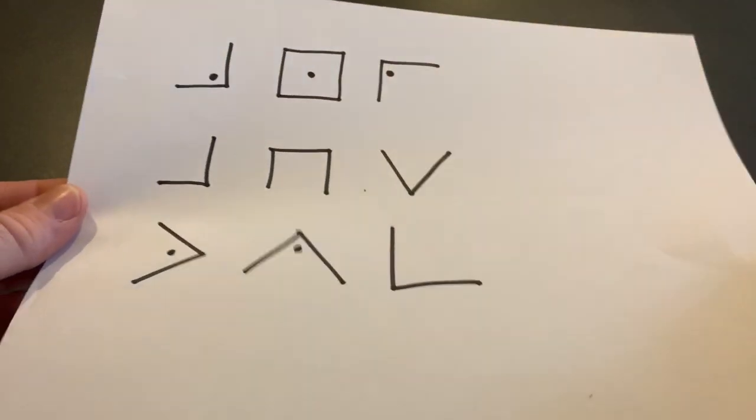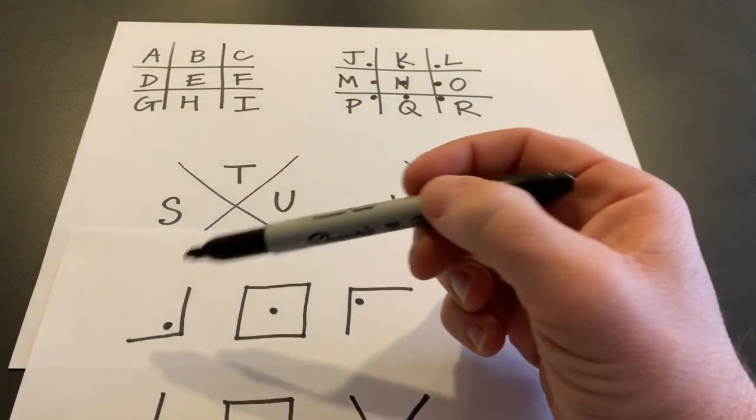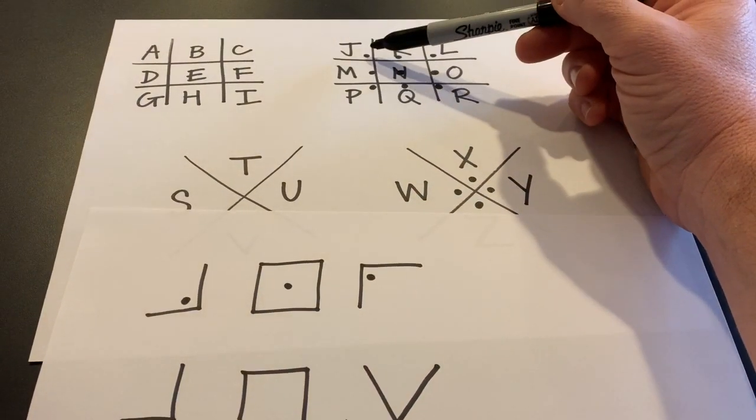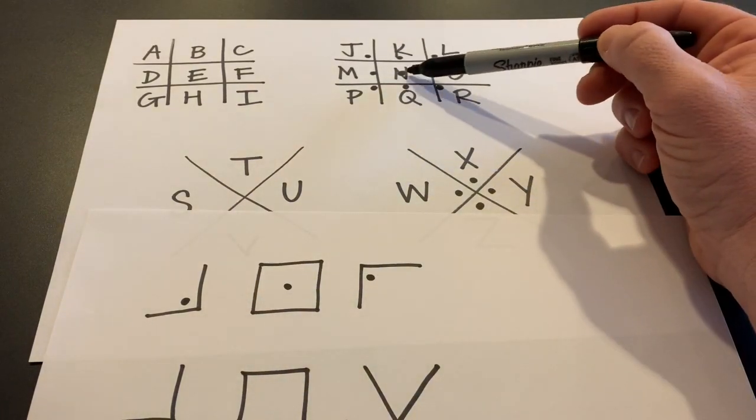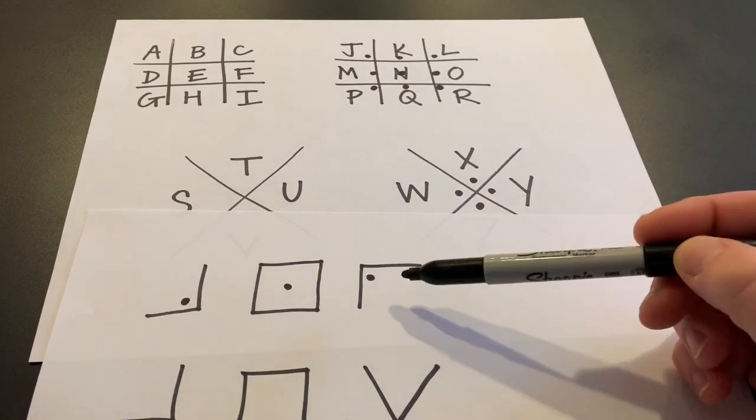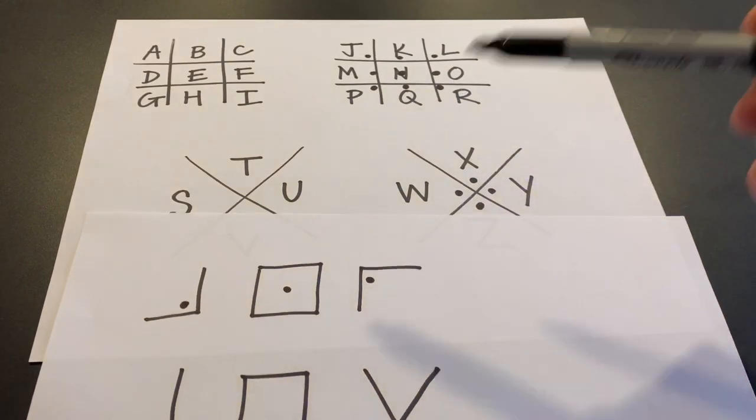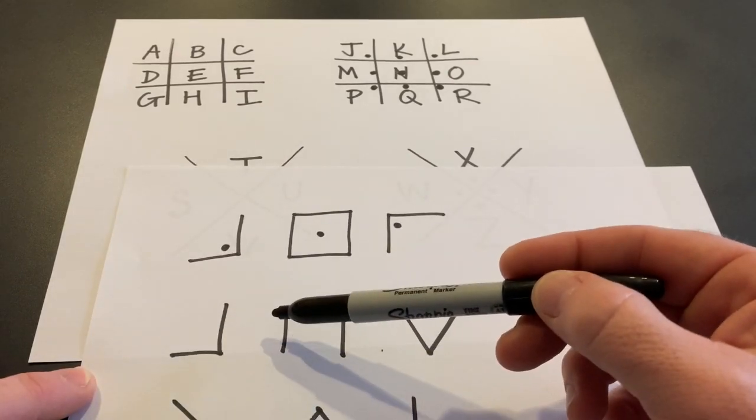So if you take that, and this is just kind of random, the top one that I just wrote randomly, that's a J. See how it coincides with that J there? This next one is an N. See, there's a dot in the middle. R, I believe, is the next one.